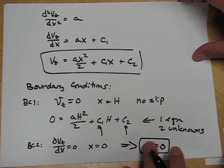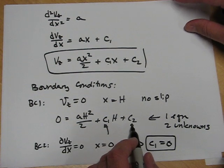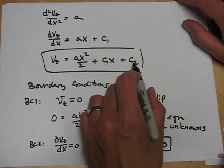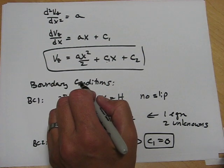Knowing c1 is zero, we can plug that into this equation and solve for c2. Knowing c2, we can put c2 in here, pick up the a from the previous slide, and we'll get our final result for the velocity.